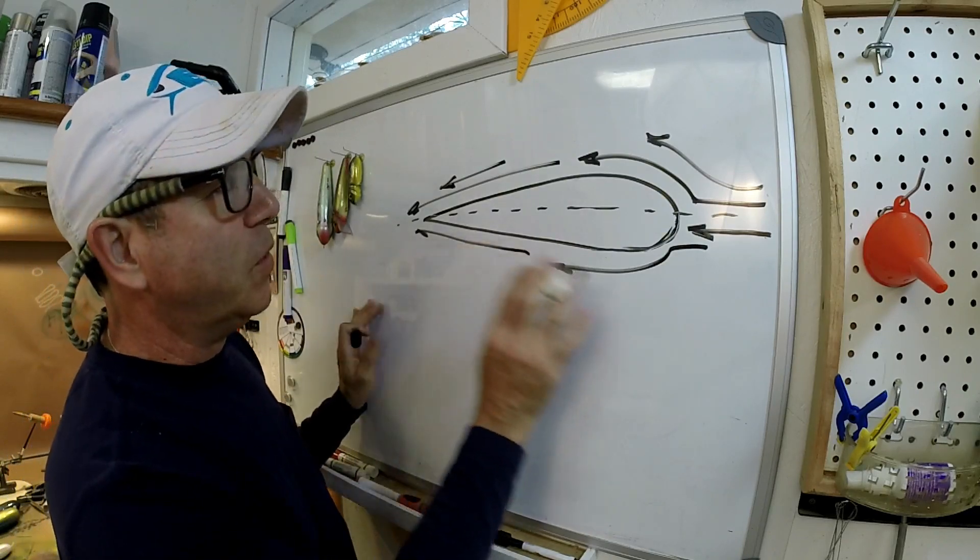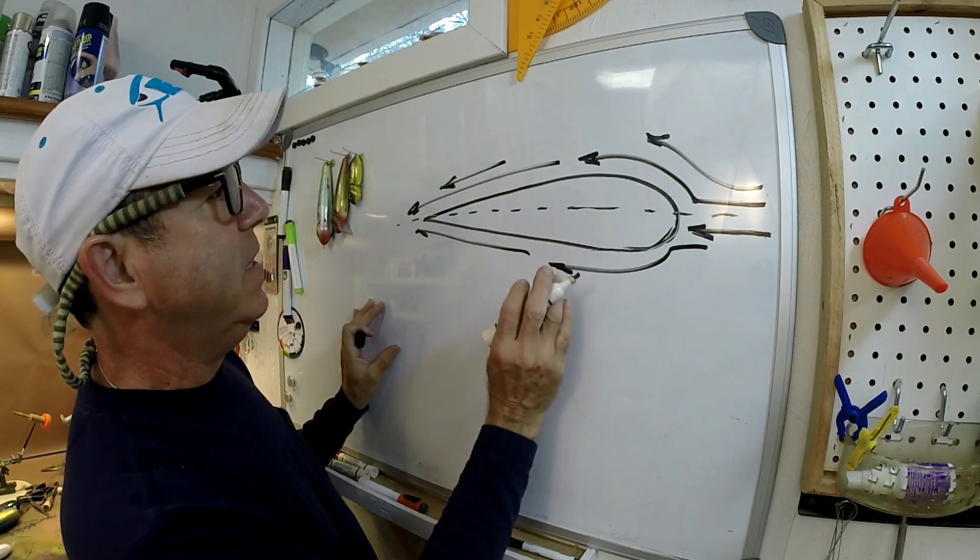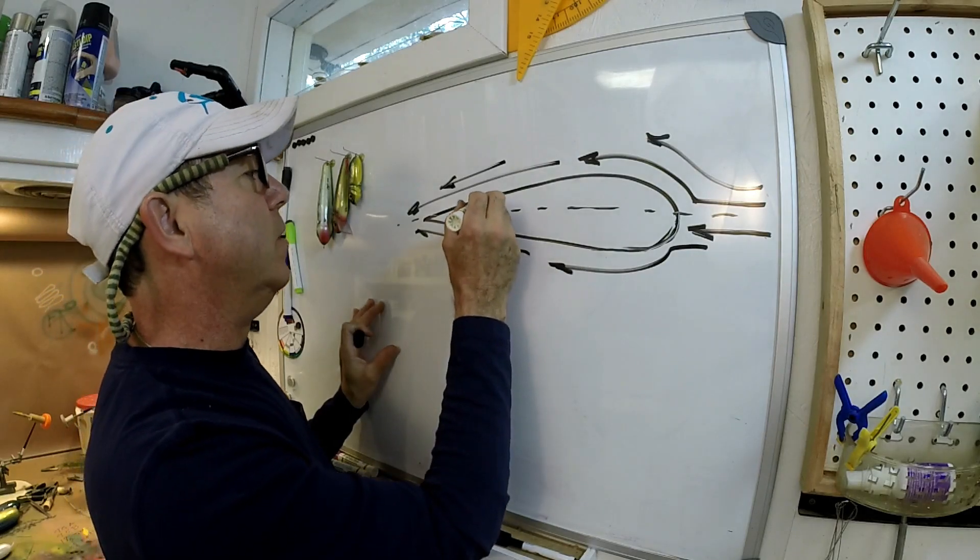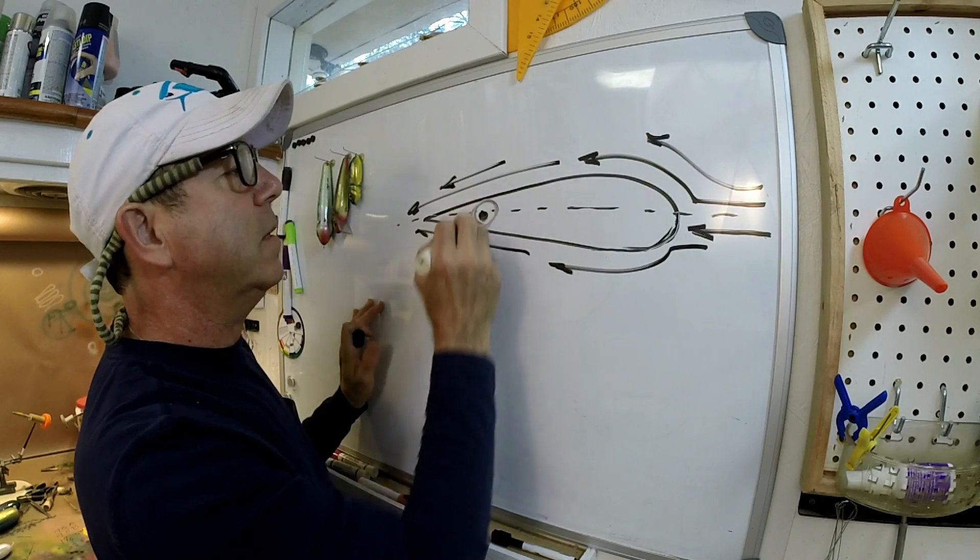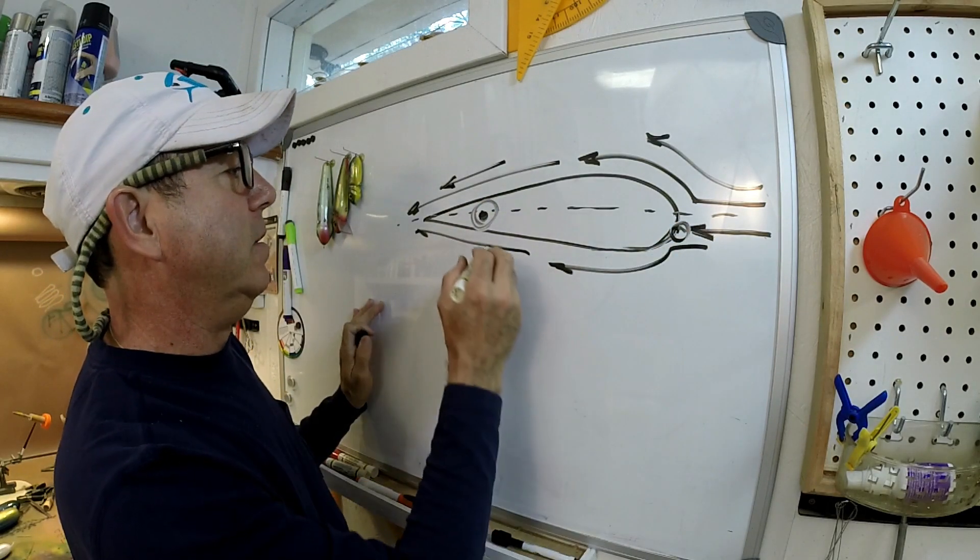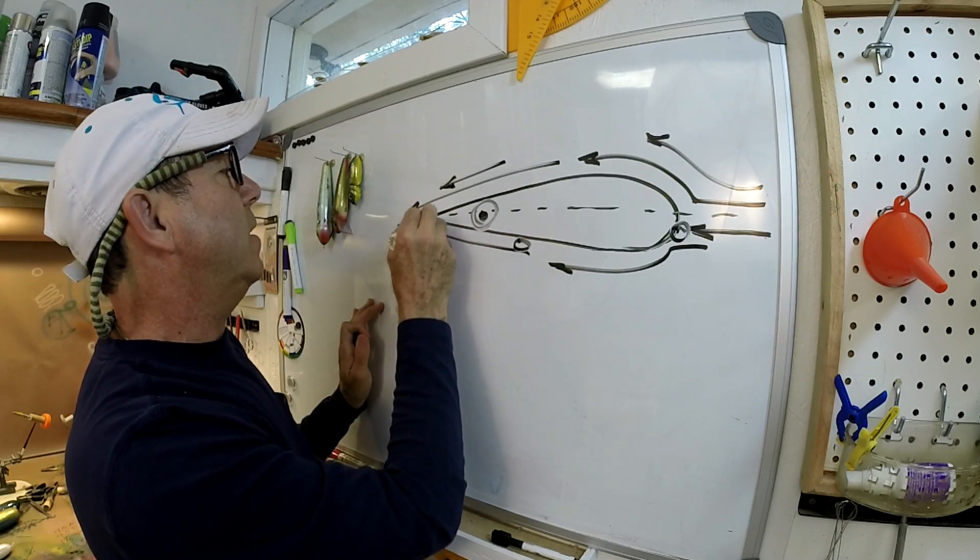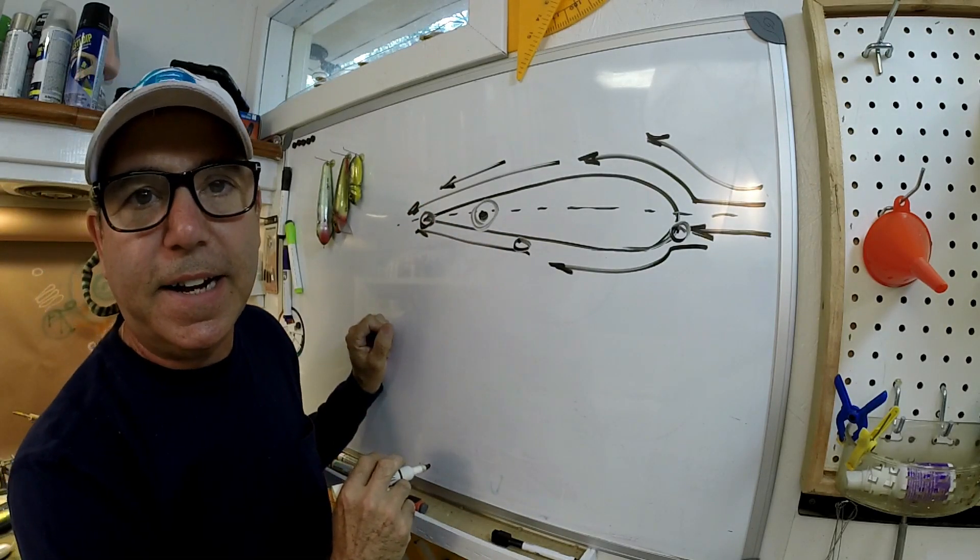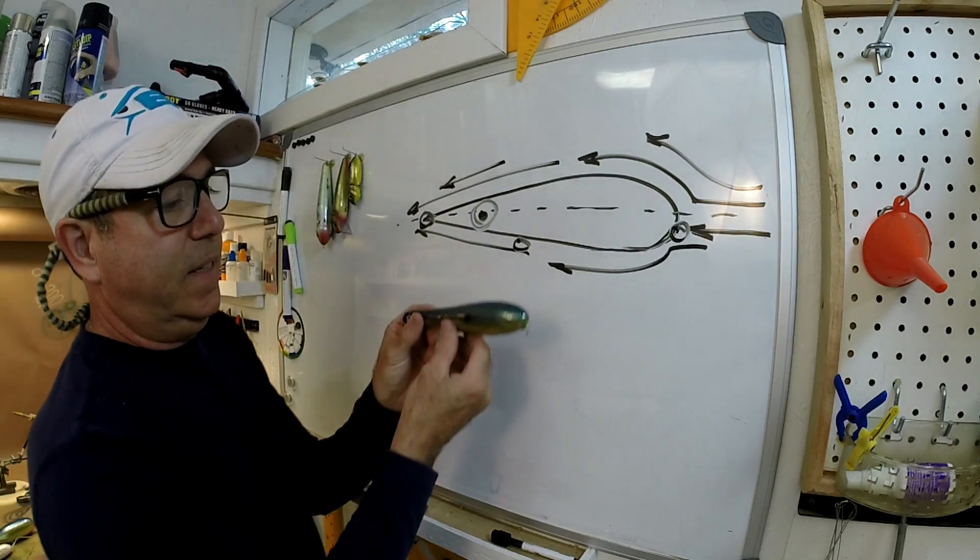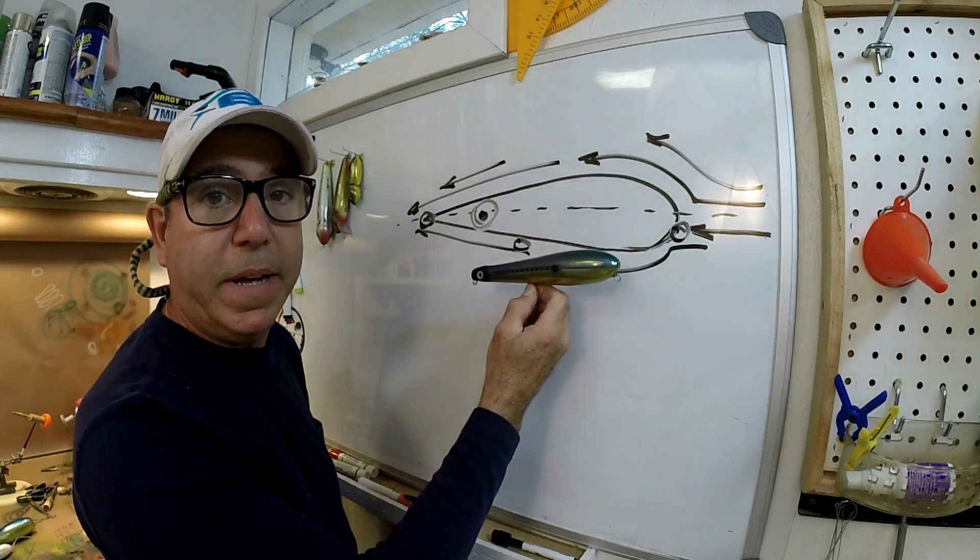So if you're looking at something like this, obviously your head would be here, you'd have your eyeball here, your tail hook here, some belly hook here, and then a place to tie it on so you can cast it. It looks like a pencil popper.